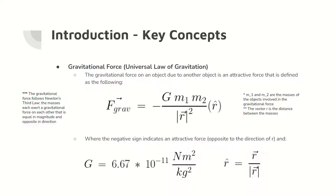The final key concept is the universal law of gravitation, which states that the gravitational force on an object due to another object is an attractive force that is proportional to the masses of the objects divided by the square of the magnitude of the distance. The gravitational force follows Newton's third law, so the force on one mass is equal to the force on the second mass in the opposite direction.